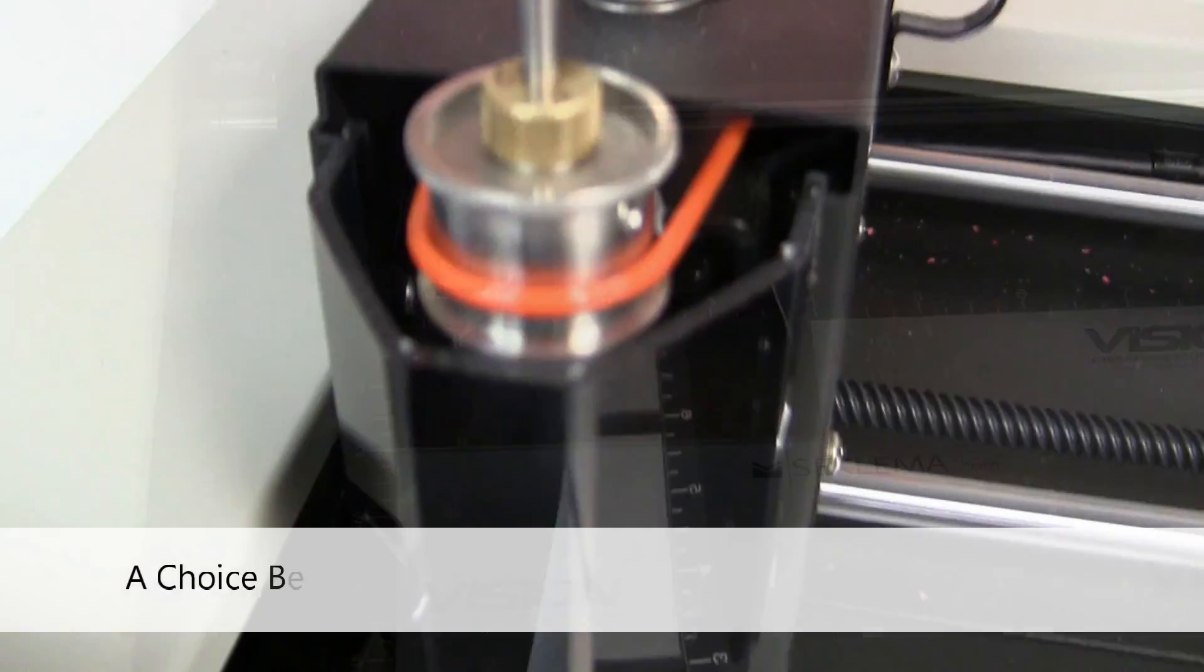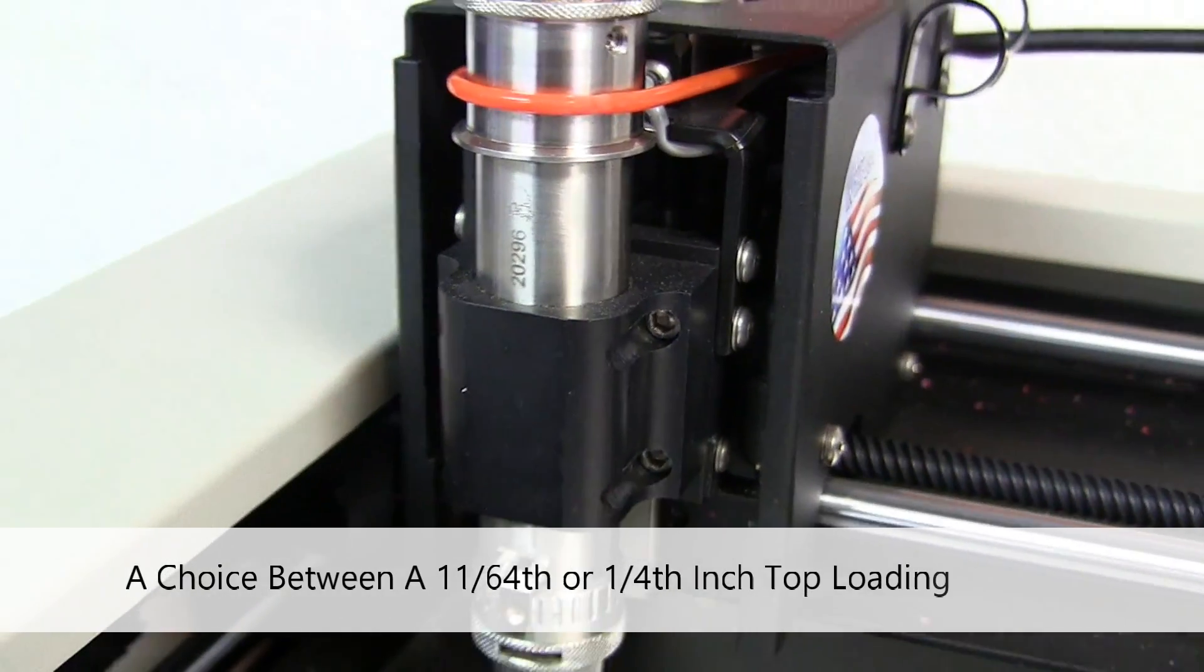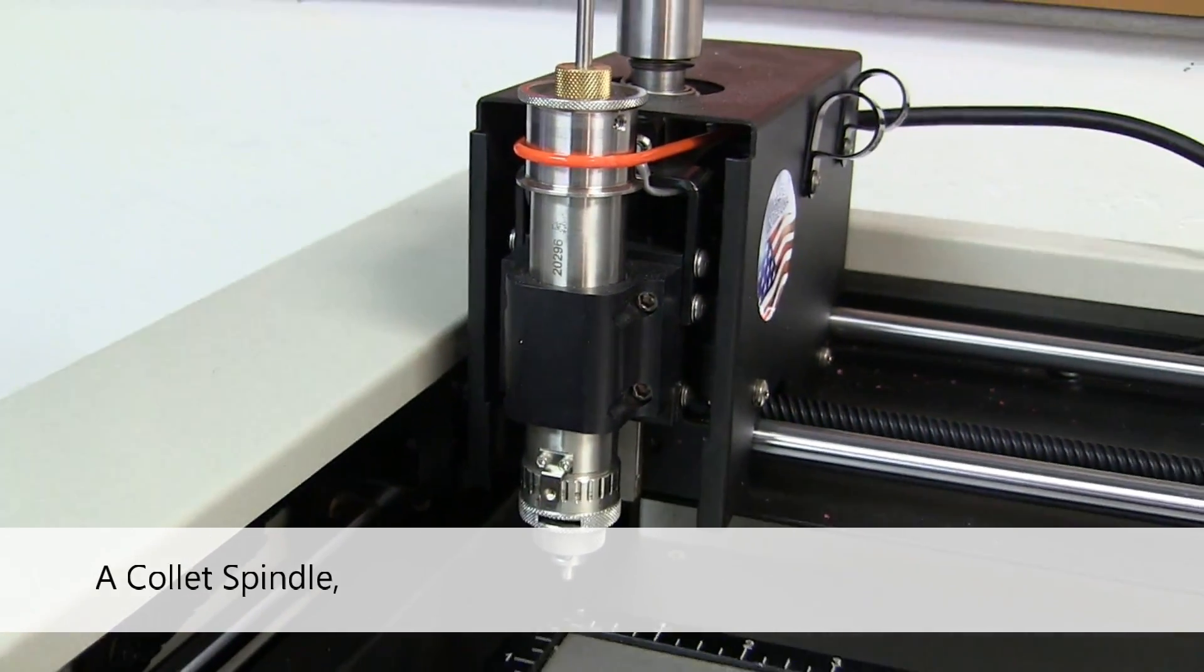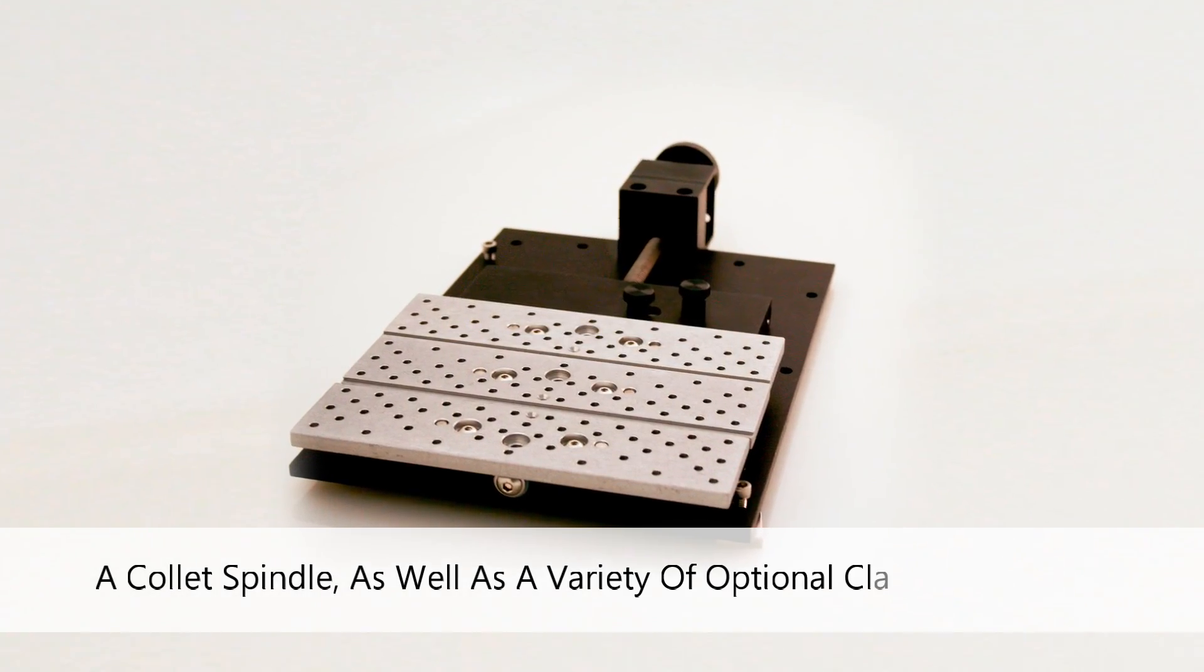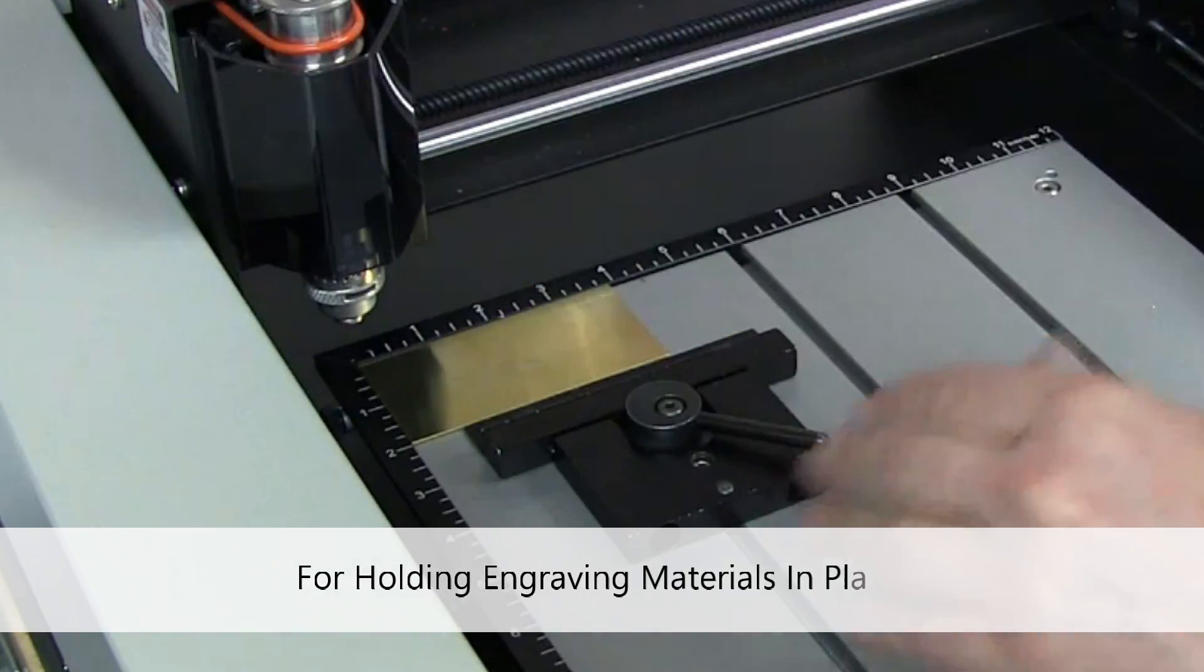Choose between an 11/64th or 1/4 inch top loading spindle collet, as well as a variety of optional clamps and vices for holding engraving materials in place.